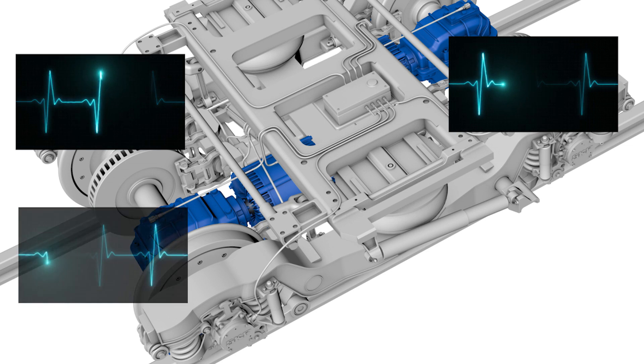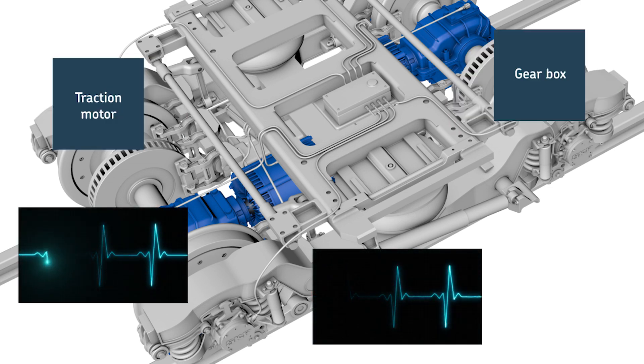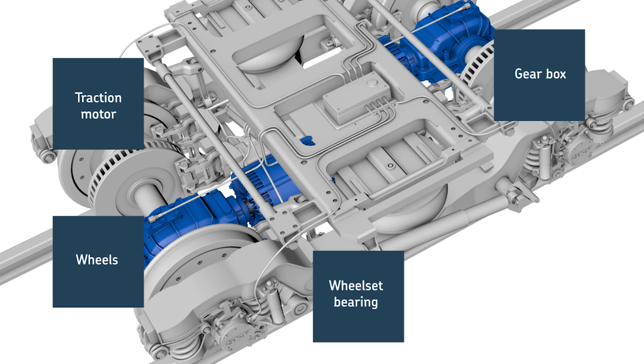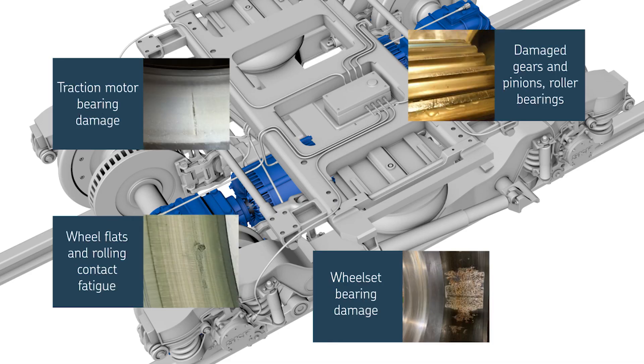Every rotating component in a bogey system also has its own unique vibration pattern. The traction motor, gearbox, wheels and wheelset bearings. With condition monitoring technology, you can isolate the vibration pattern of each component and detect early symptoms of damage to it.